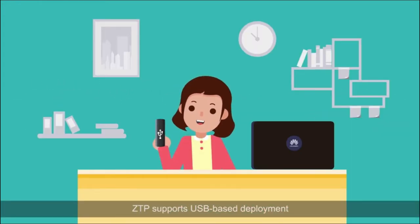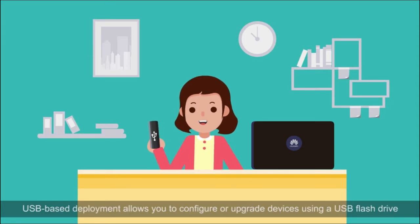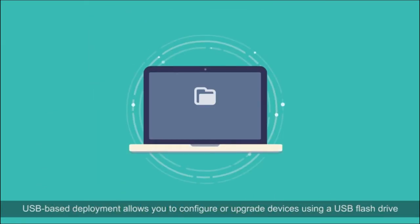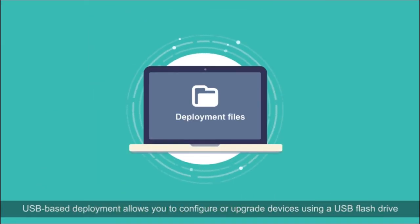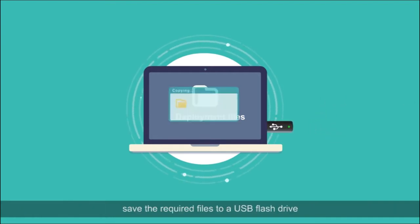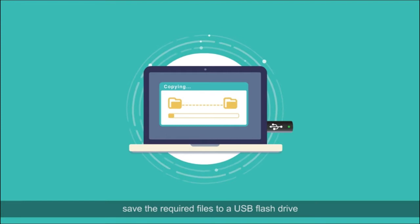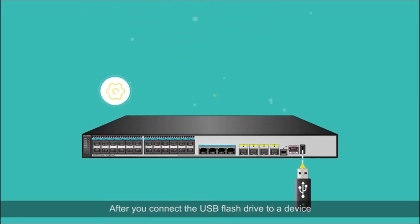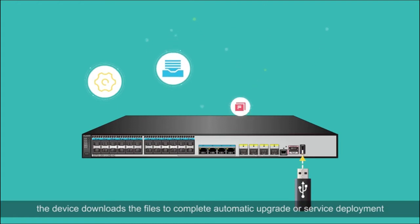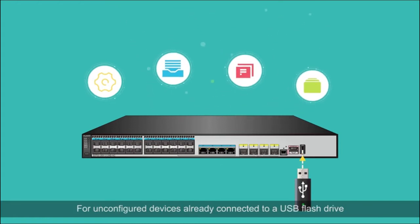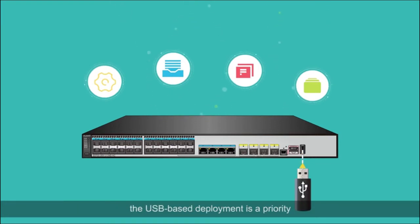ZTP supports USB-based deployment, which allows you to configure or upgrade devices using a USB flash drive. Before device deployment, save the required files to a USB flash drive. After you connect the USB flash drive to a device, the device downloads the files to complete automatic upgrade or service deployment. For unconfigured devices already connected to a USB flash drive, USB-based deployment is a priority.